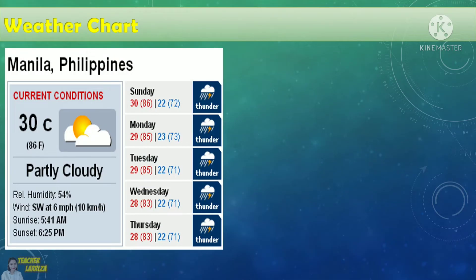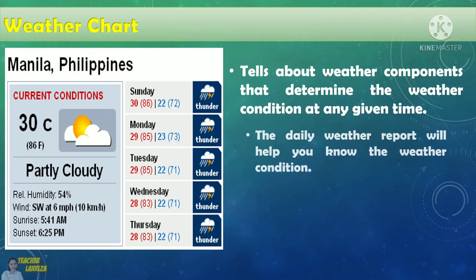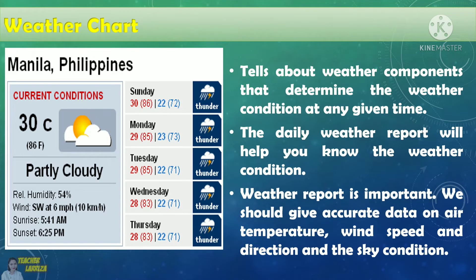Now, let us see how weather components look like on a weather chart. A weather chart tells about weather components that determine the weather condition at any given time. The daily weather report will help you know the weather condition. Mahalaga ang datos ukol sa panahon. Ito ay dapat na naglalaman ng tamang datos ukol sa temperatura, bilis at direksyon ng hangin, at ng kondisyon ng kalangitan. Sa tulong ng weather chart ay maaari nating planuhin ang mga bagay na maaari nating gawin sa isang araw. It also helps us to be safe and to prepare for dangers and calamities.